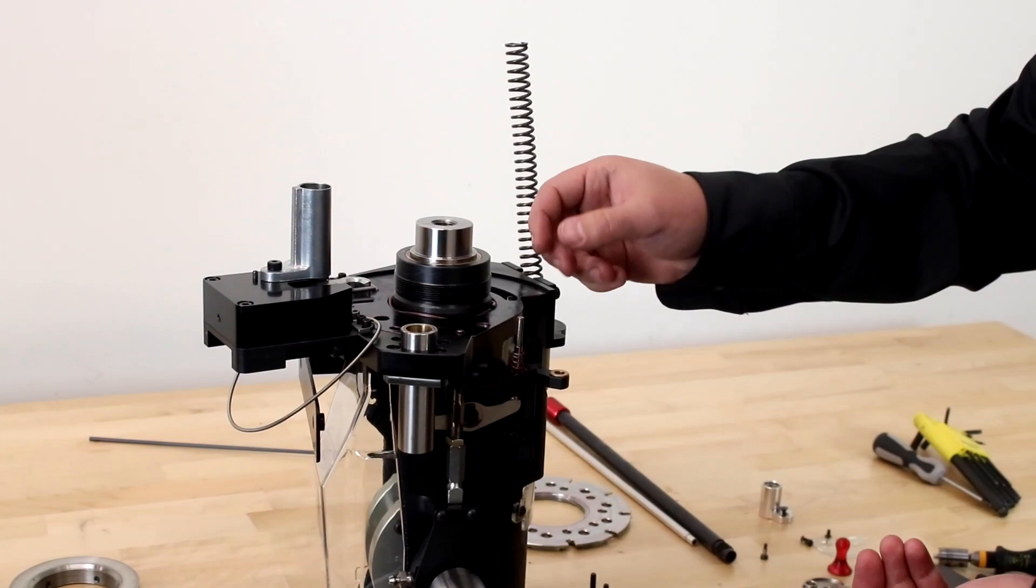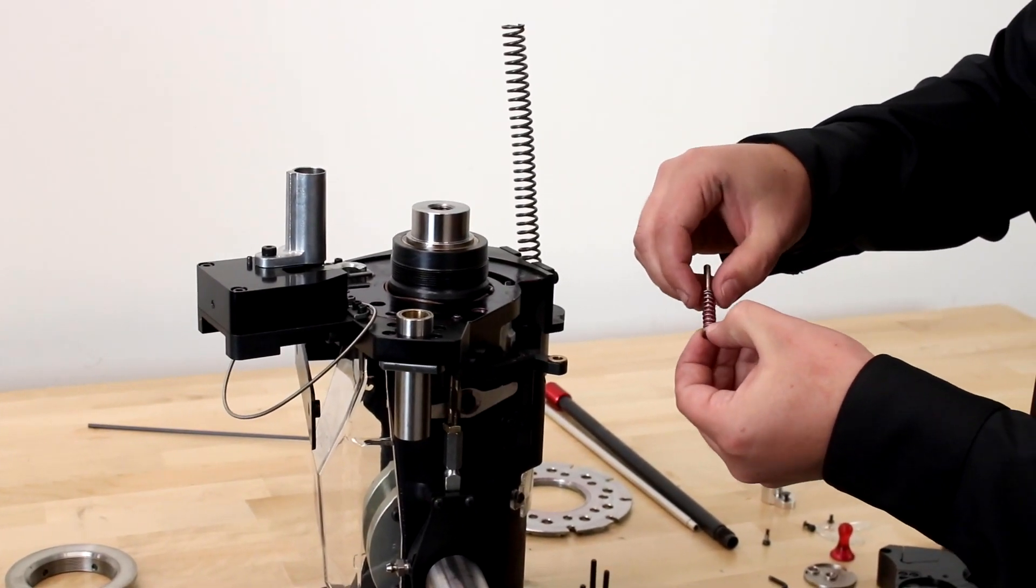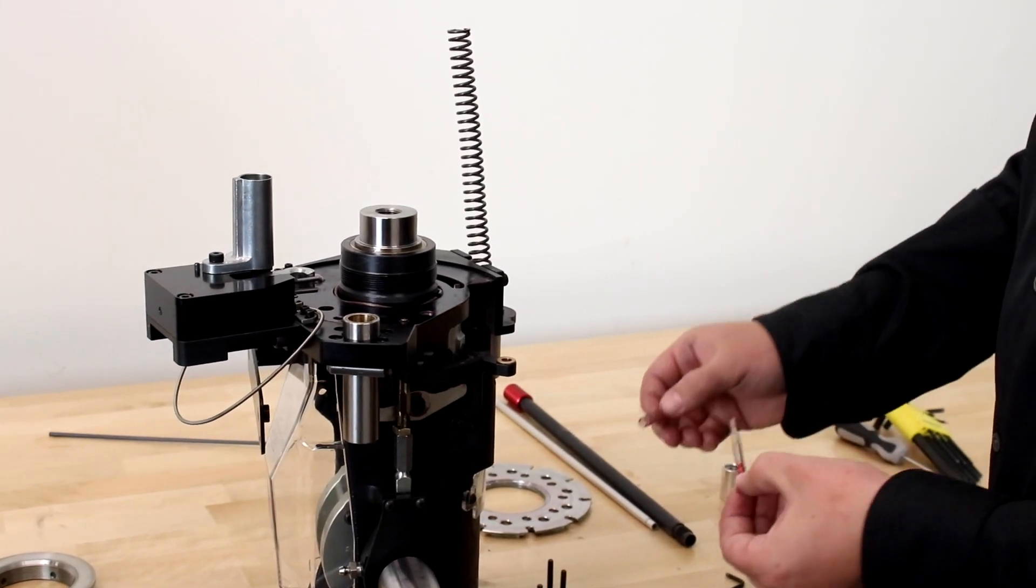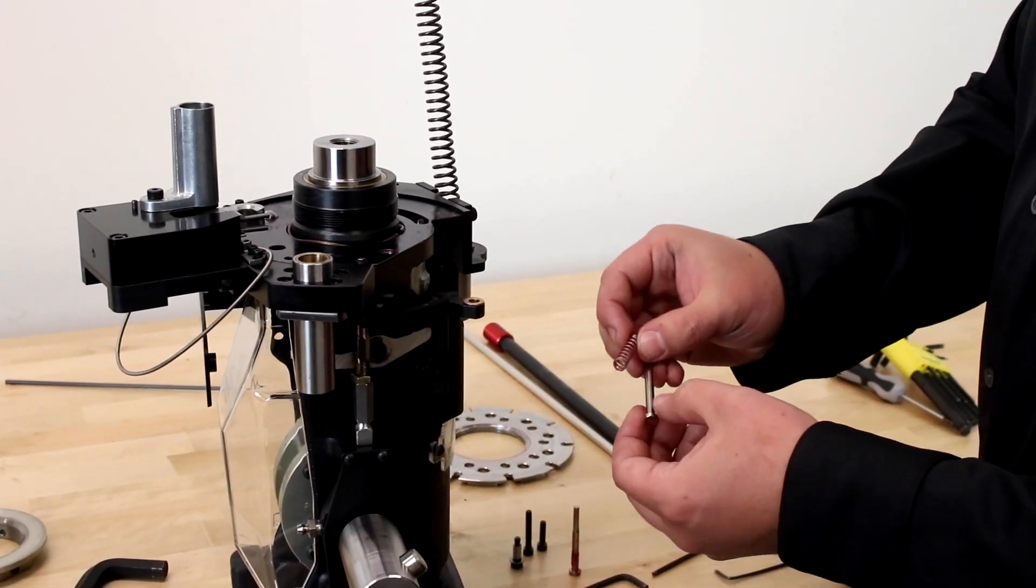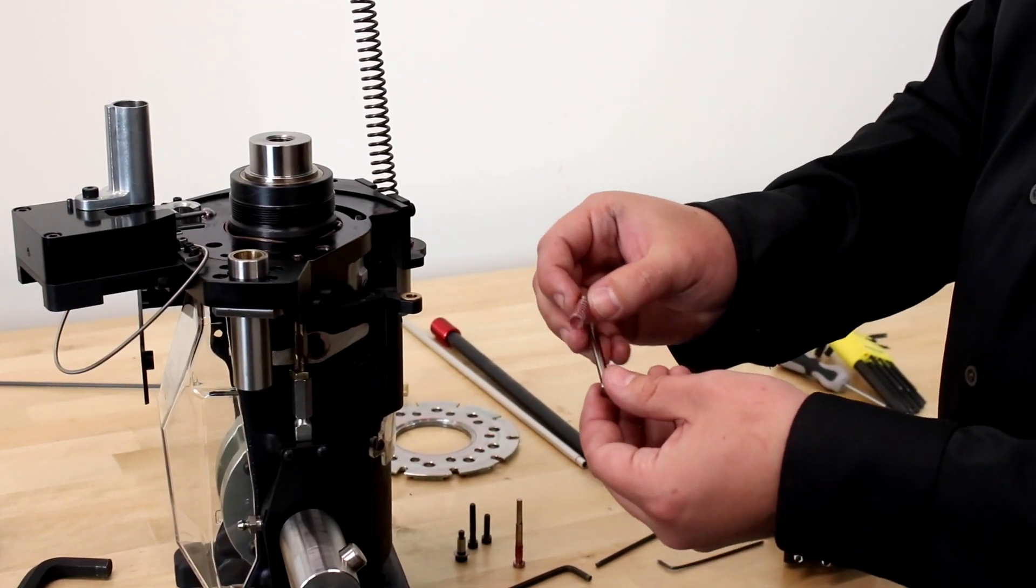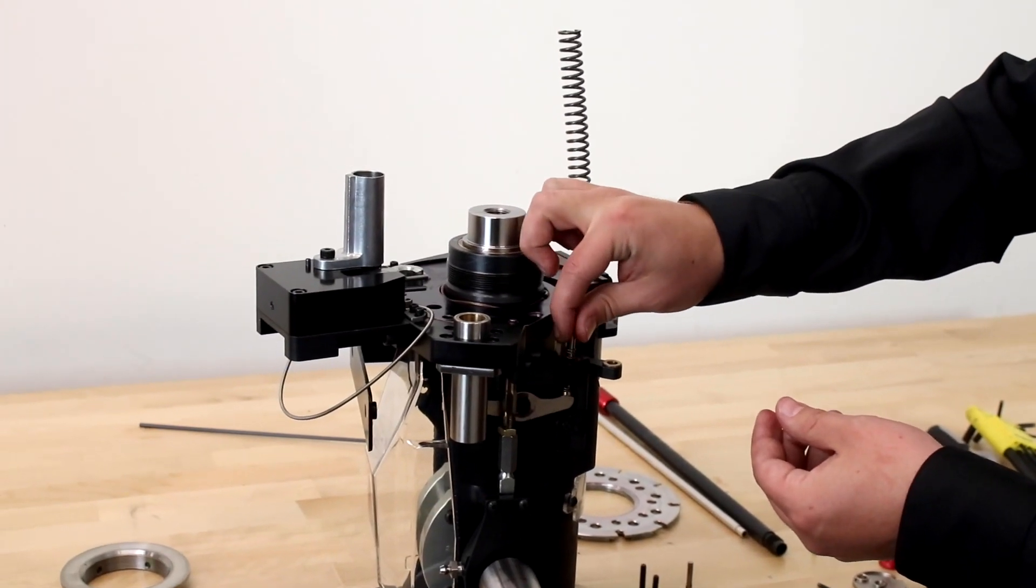Now to swap the primer punch, all I'm going to do is remove the primer punch, remove the spring, set the punch aside, apply a little grease to the bottom of the primer punch here, slide the spring back on, and back into the bolt.